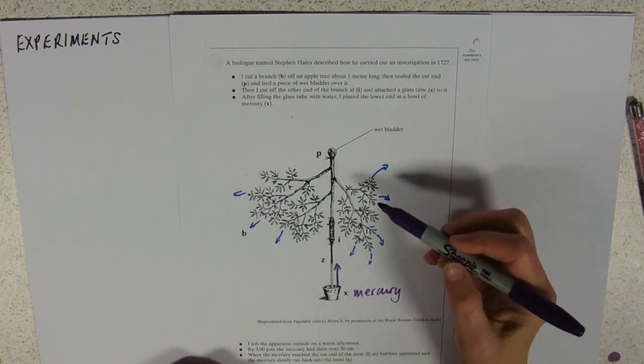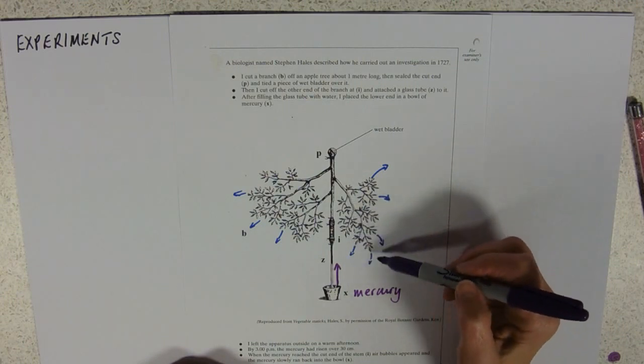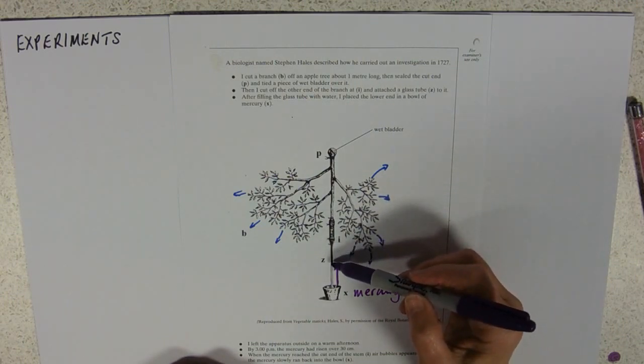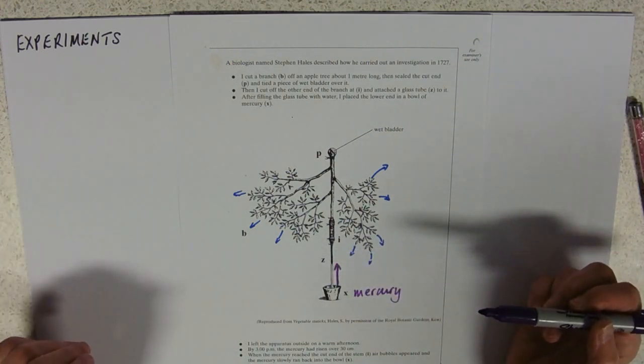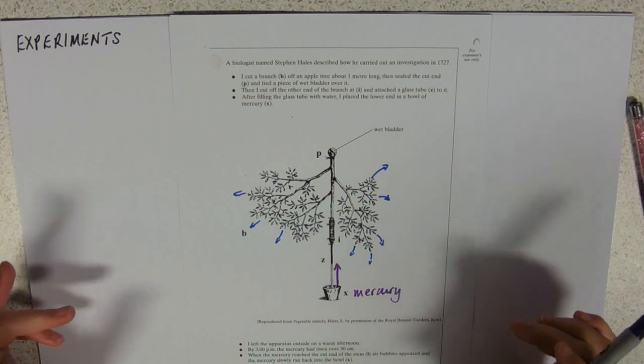So, what is happening here is that the water is evaporating from the leaves. It's pulling on this water, which is pulling the mercury out of the bucket. So, the water and the mercury are stuck together.